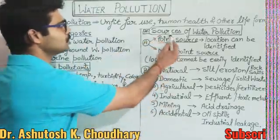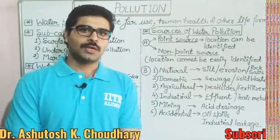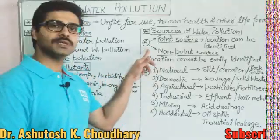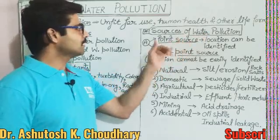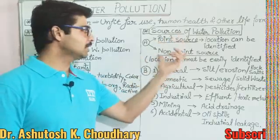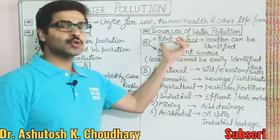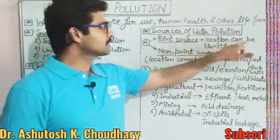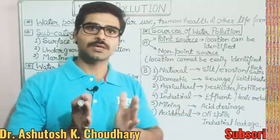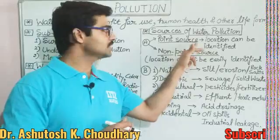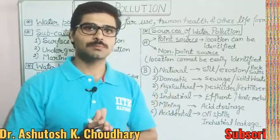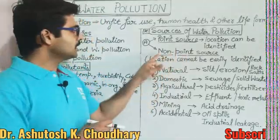Now you should know the sources of water pollution. As per the first classification, sources can be divided into point sources and non-point sources. Point sources are where the location of the pollution can be identified and marked. Examples include discharge of industrial effluents and discharge from sewer lines.